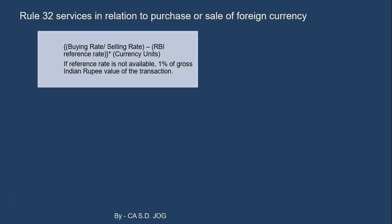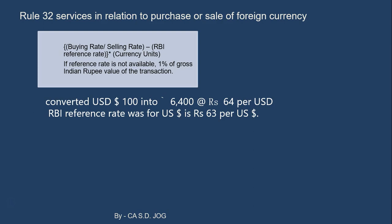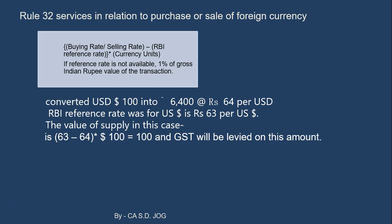Under Option A, the formula is: buying rate or selling rate minus RBI reference rate, multiplied by currency units. For example, 100 USD are converted at Rs. 64 per USD, so Rs. 64,000 total. The RBI reference rate for USD was Rs. 63. The difference is Rs. 1 multiplied by 100 currency units, giving Rs. 100. GST will be levied on Rs. 100.